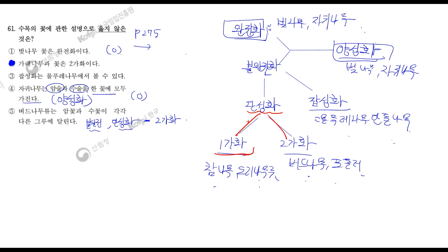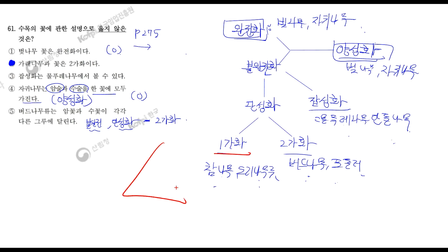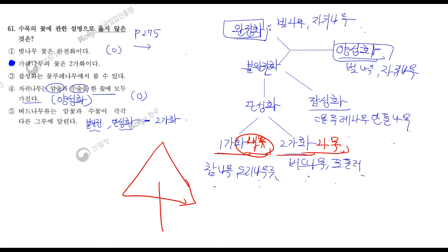단성화에는 다시 1가화와 2가화로 나누어집니다. 1가화는 한 나무에 암꽃과 수꽃이 모두 달리는 나무입니다. 책에서는 참나무류와 오리나무류를 대표적으로 들었어요. 1가화는 1가화 나무라고 써주시고, 2가화도 2가화 나무라고 외워주십시오. 그러면 헷갈리는 게 조금 덜합니다. 그루수를 물어봤기 때문에 나무라는 표현으로, 그루당 꽃이 두 개라고 생각하시면 됩니다.